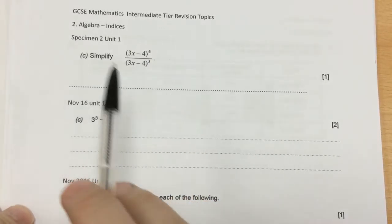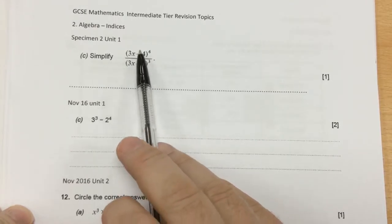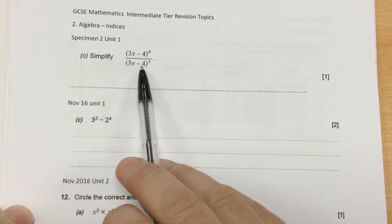Algebra indices. When we're working with indices, if you've got the same base, and in this case you have, because they're both 3x minus 4,